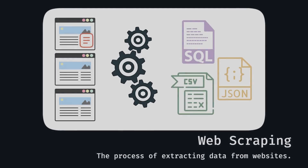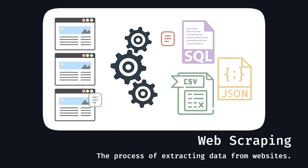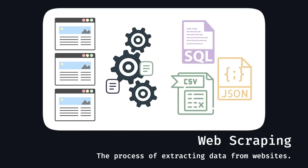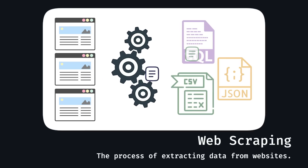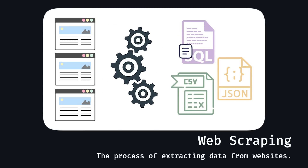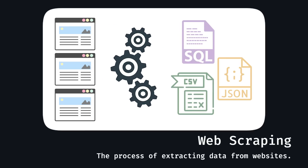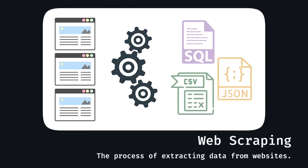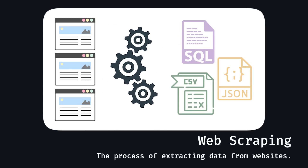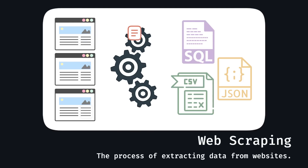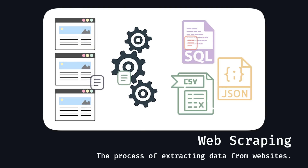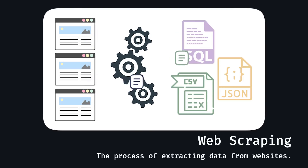Web scraping, simply put, is a process of extracting data from a website. You programmatically send requests to a website, receive the data you specified in your code — if all goes well — parse the data to extract specific data points, and then use said data for whatever needs you have.